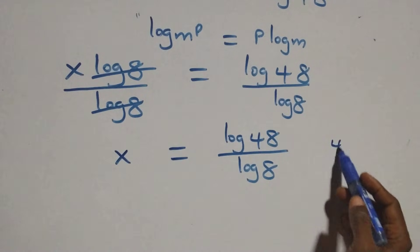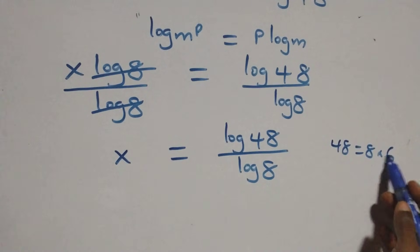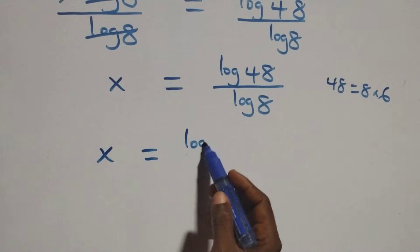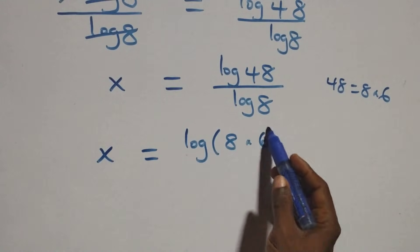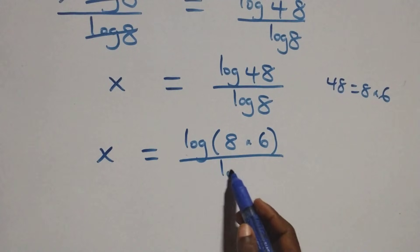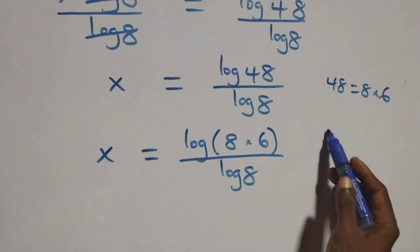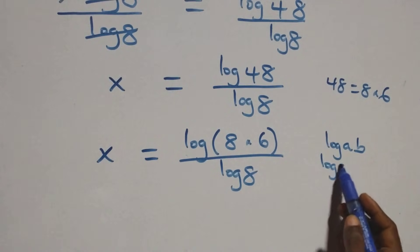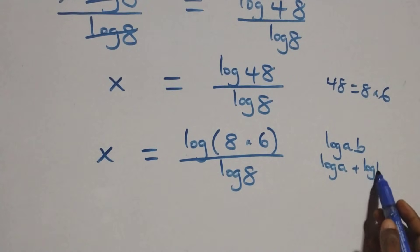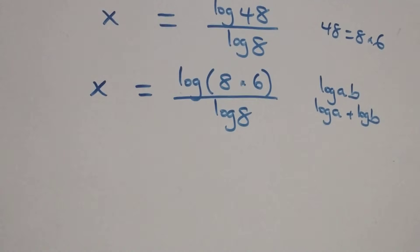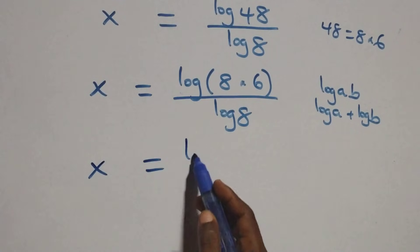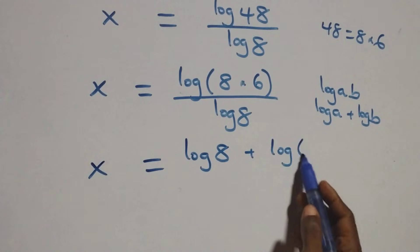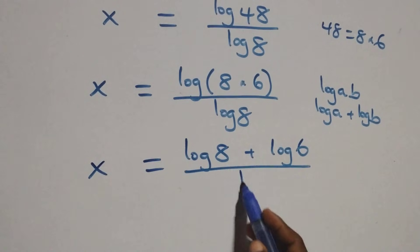Then here we can rewrite 48 as 8 times 6. So what we have becomes x equals to log of 8 times 6 over log 8. Then using the log product rule — when we have log a times b, this can be expressed as log a plus log b — so x equals to log 8 plus log 6, all over log 8.